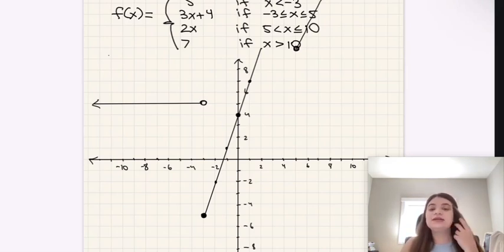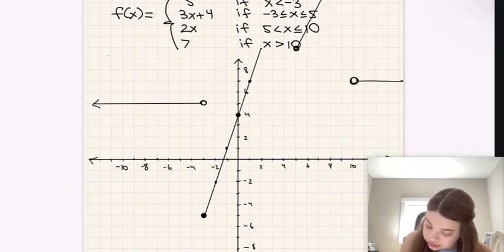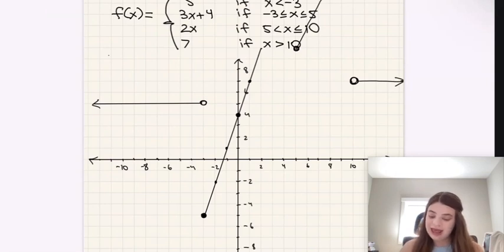And then last but not least, we have 7. If x is greater than 10, f of x is 7. So I'm going to start at 10, 7, which is right here. And here I'm going to do an open circle, because 10 is not included. It's strictly greater than 10, not greater than or equal. And then we're going to draw a line to the right. Because for every point that is greater than 10, our value should be at 7. And so that's how we can graph this on the grid. Key things to remember are to look for where the boundaries are, so we can draw each function just at that boundary.